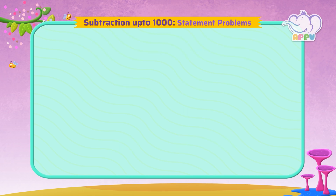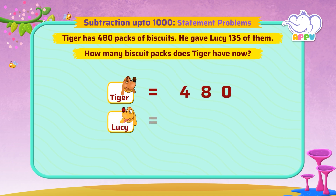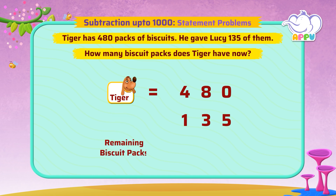Tiger has 480 packs of biscuits. He gave Lucy 135 of them. How many biscuit packs does Tiger have now?